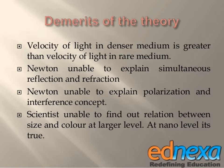Newton was unable to explain the simultaneous reflection and refraction. He was also unable to explain polarization, interference, and diffraction phenomena related to light. Scientists were also unable to find out the relation between the size and color of corpuscles.